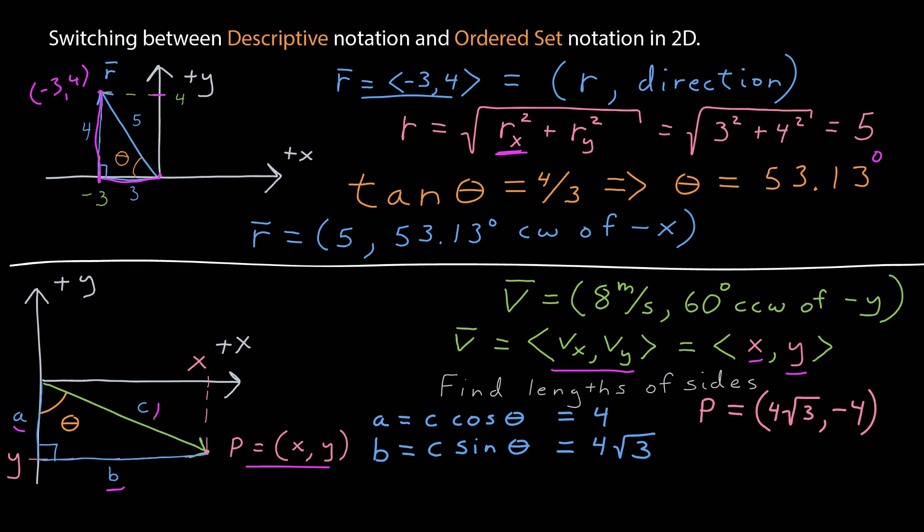I can see from my picture that the x-coordinate is positive and the y-coordinate is negative, so the ordered pair for the point is 4 times the square root of 3 and negative 4.